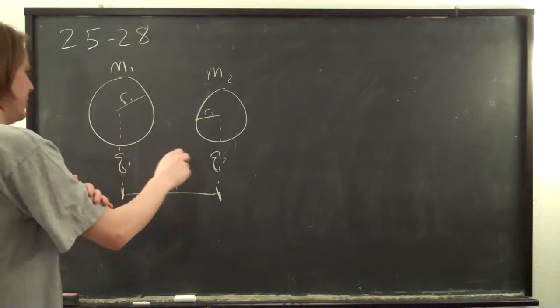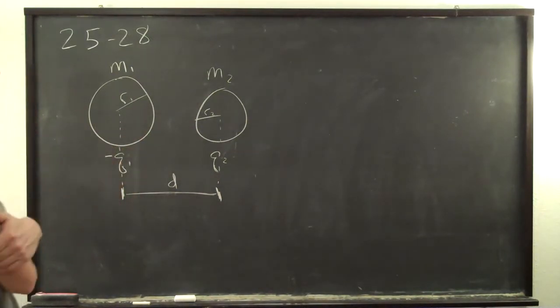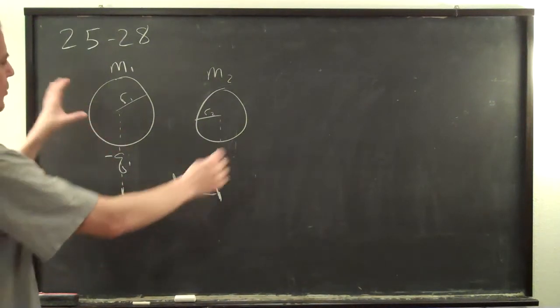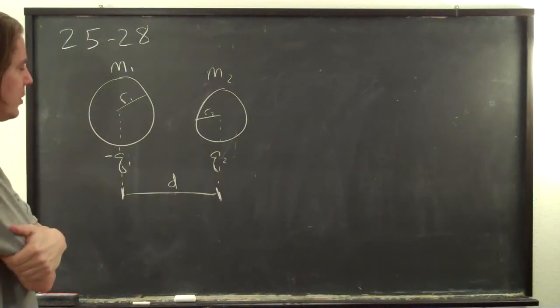Because since one is positive and one is negative, it's minus Q1, this one's negative, and positive Q2, they'll be attracted and they'll move together until they touch. And how fast are they going when they touch?